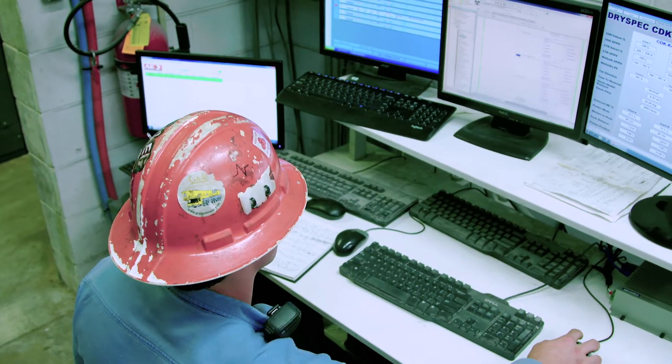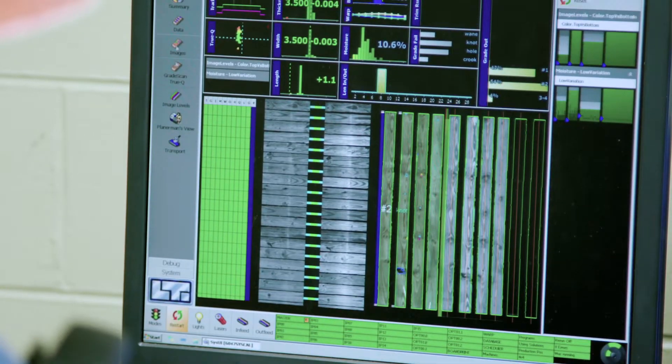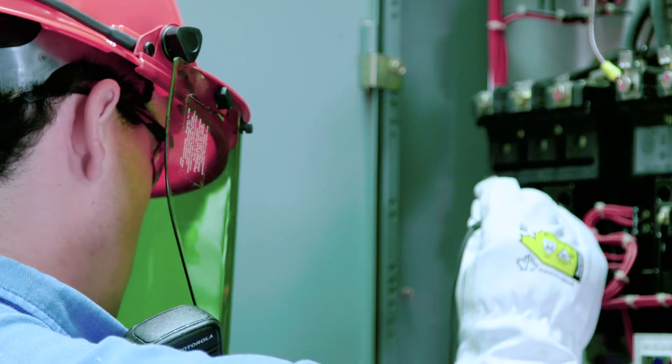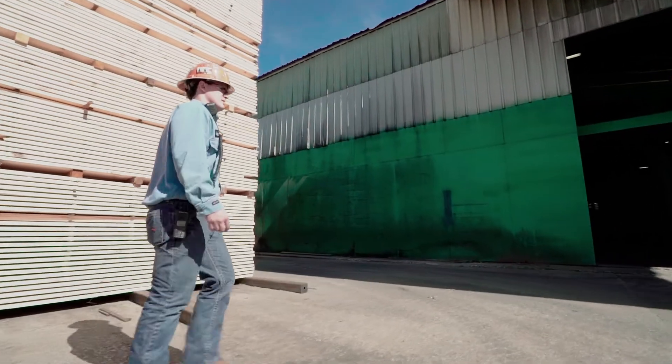As an industrial electrician, you'll need to interpret drawings, blueprints, and electrical code specifications, install, examine, replace, and repair electrical wiring, and troubleshoot, maintain, and repair industrial electrical and electronic control systems.